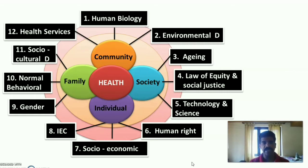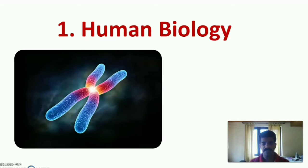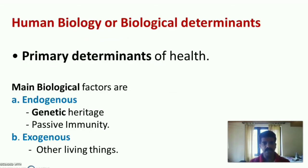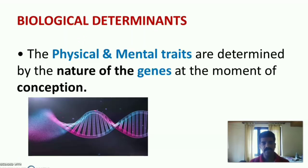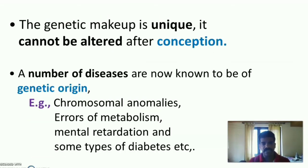The first factor is human biology. Biological determinants are the primary determinants of health. Main biological factors are endogenous and exogenous. Endogenous includes genetic heritage and passive immunity. Exogenous refers to other living things which influence our health. The physical and mental traits of every human being are determined by the nature of the genes at the moment of conception. The genetic makeup is unique and cannot be altered after conception.